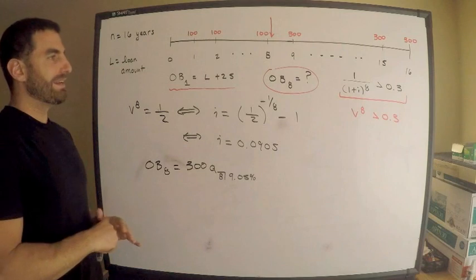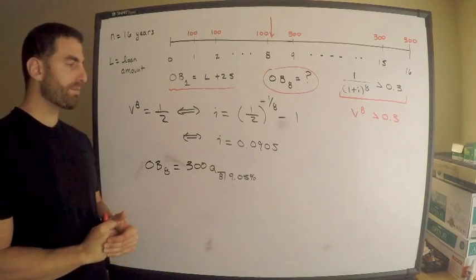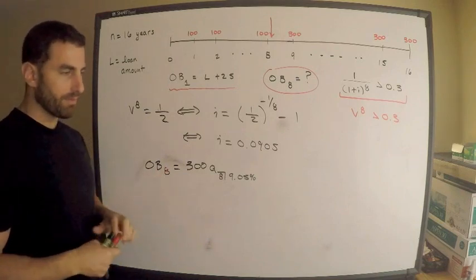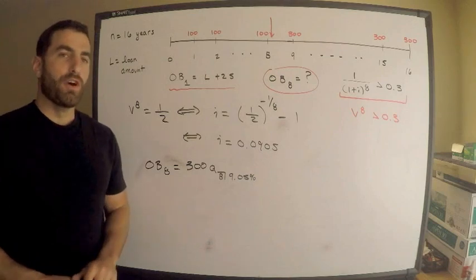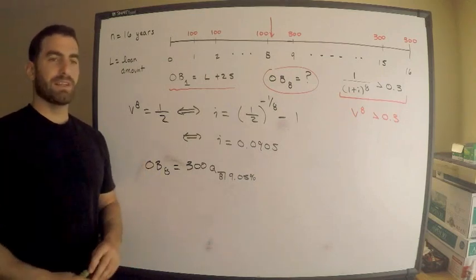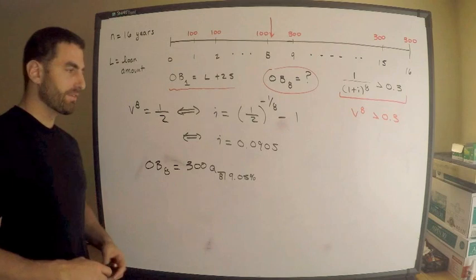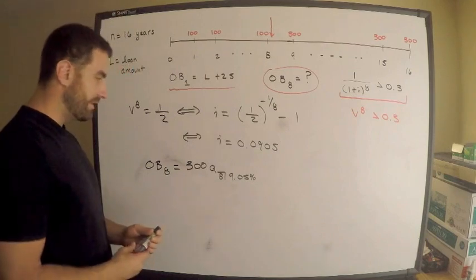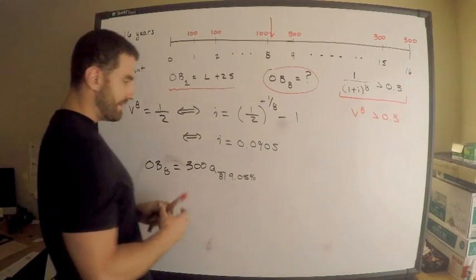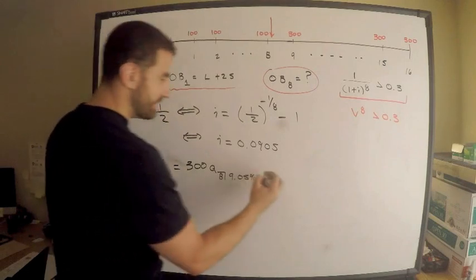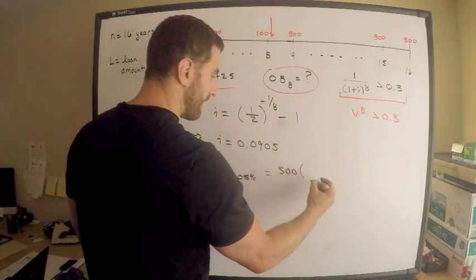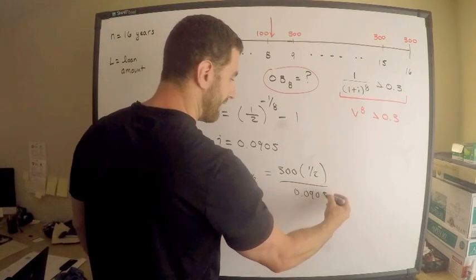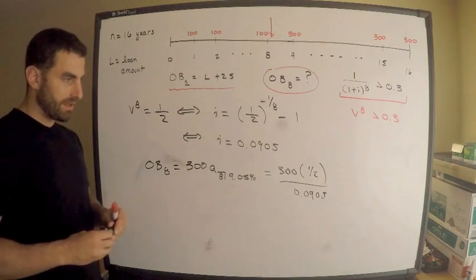You don't need the BA II Plus for this — you could compute it directly since v^8 equals 0.5, so it's really 300 times (1 minus 0.5) divided by 0.0905. But I'll demonstrate the BA II Plus approach since it's useful to know for this exam.